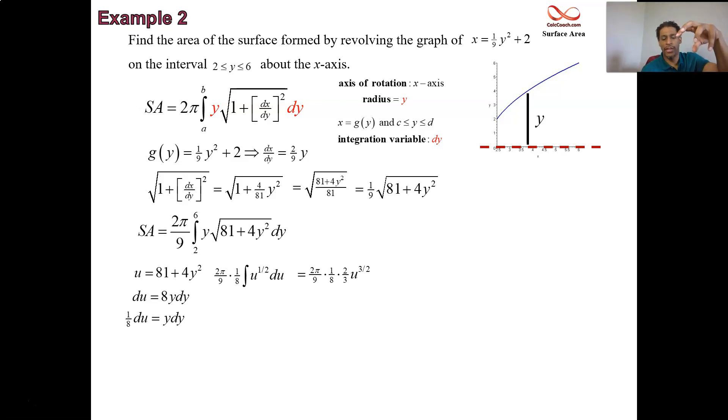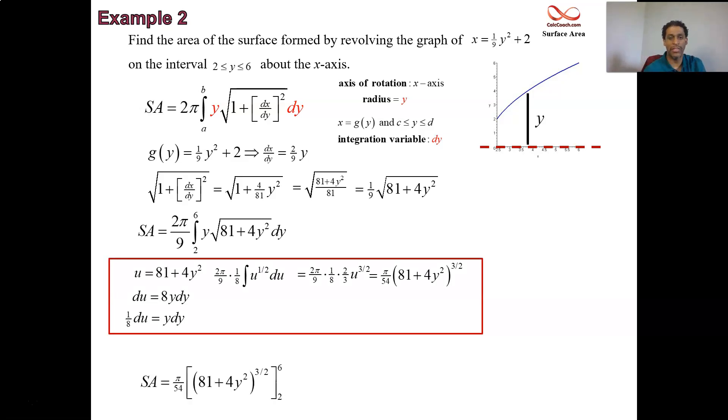You have your 2 pi over 9. Now you have your 1 eighth. And your integral now is going to be u to the 1 half du. Which is u to the 3 halves times 2 thirds. And that all combines to be 2 pi with the 2. That's 4 pi. That 4 can make the 8 into a 2. So 9 times 6, 54. Pi over 54, u to the 3 halves. And u is 81 plus 4y squared. All of this was some side work. We had to figure out what the antiderivative of that was. U sub came to the rescue. We know that the antiderivative of our function is exactly pi over 54, 81 plus 4y squared.